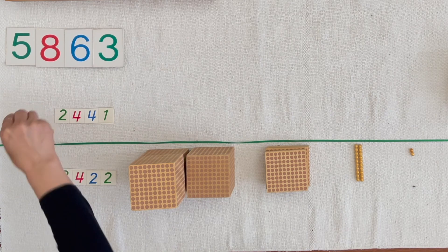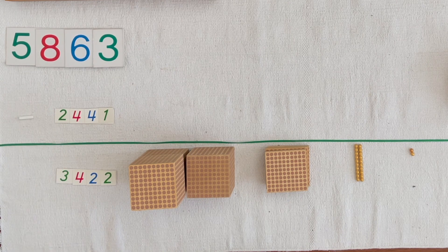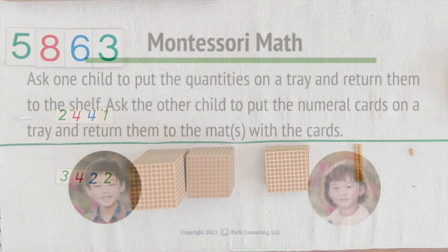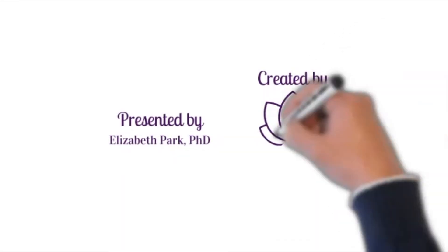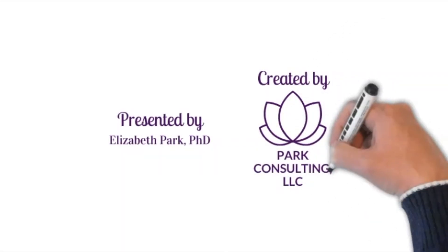This operation is called subtraction, and subtraction has a special sign. These are all the absolute numbers. Here are the basic ones of the small number. Let's take a moment.